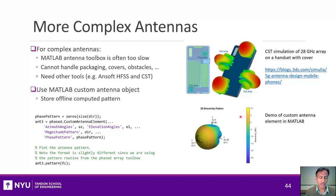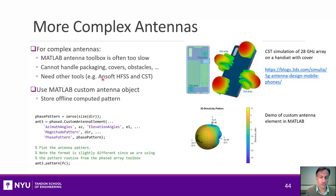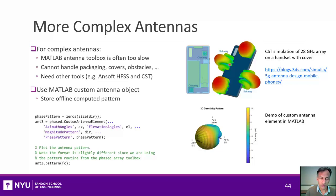At some point MATLAB will get too slow for more complicated structures — particularly when there are other materials like packaging, covers, or obstacles around the antenna that you want to simulate. In those cases, you need other software tools. These are beyond this class, but if you take an EM class you will cover them. With those tools, for instance, you can simulate how an antenna array on a smartphone radiates while accounting for the actual metallic structure of the phone.